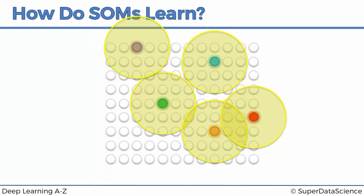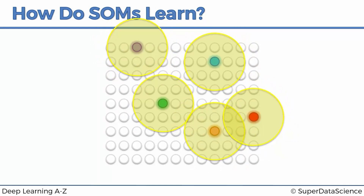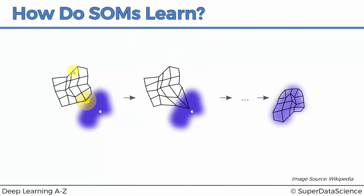Then again the radius is shrunk further, and an even smaller set of nodes are pulled for each BMU. The process becomes more and more accurate as you go through your data set again and again. At the start you were just trying to get your entire self-organizing map close to your data and roughly on the surface of it. Then as you go through more and more iterations, you are adjusting your self-organizing map in a more precise, laser-specific manner.